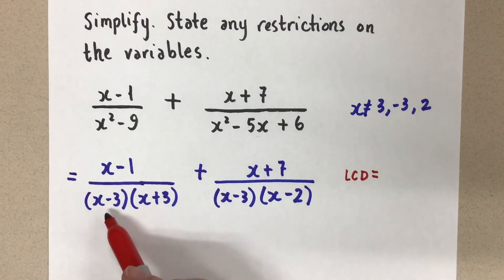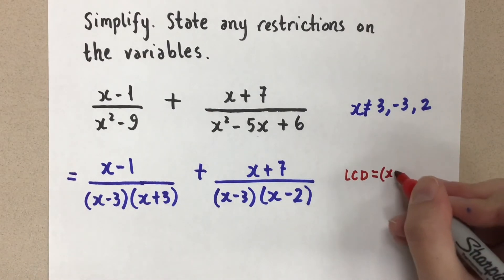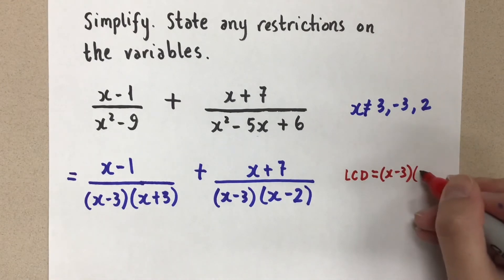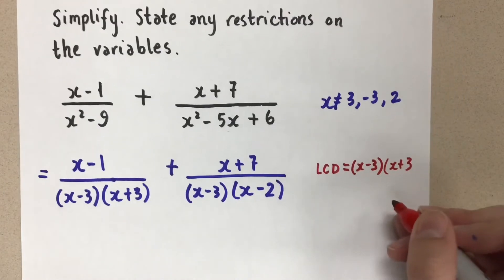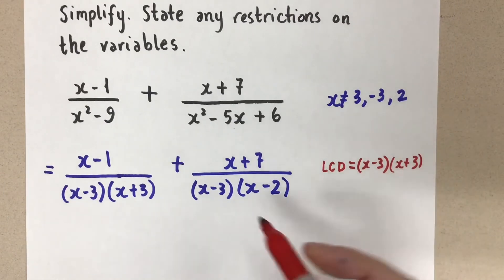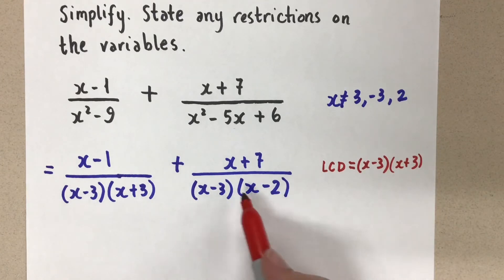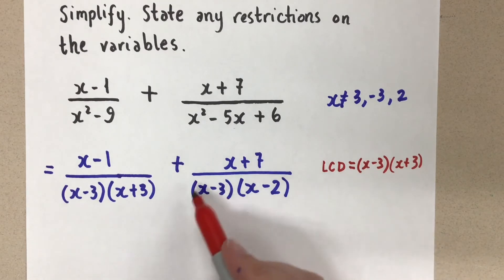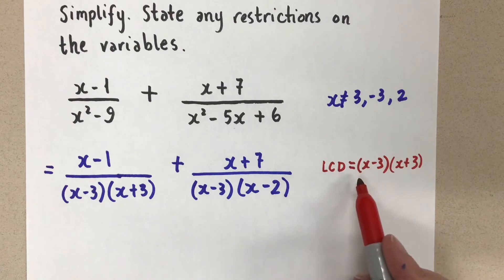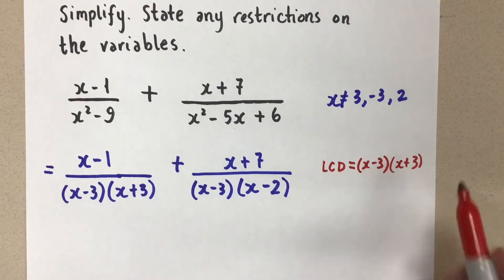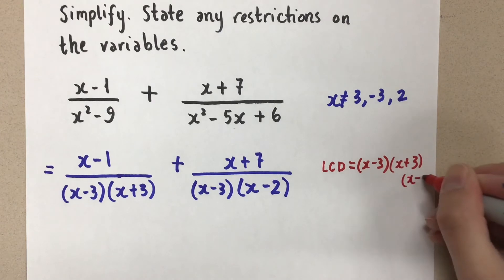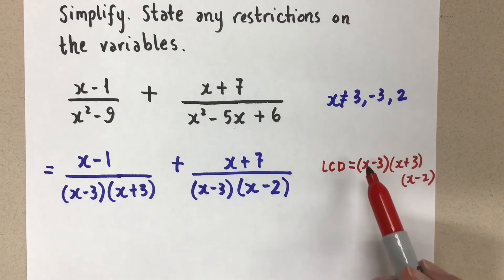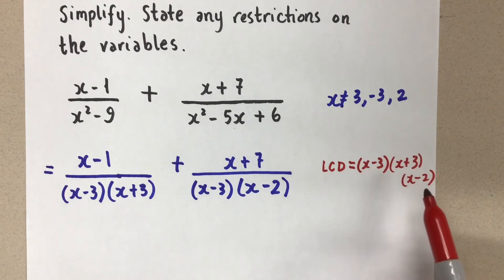In this denominator, I have a factor that's x minus three, so I need one of those in my denominator. Now look at the next denominator. I need at least one x minus three — I already have one, so I'm not going to write it again. But I need an x minus two factor, which I don't have here, so I need an x minus two. My new denominator will be x minus three times x plus three times x minus two.